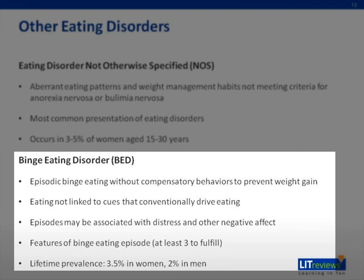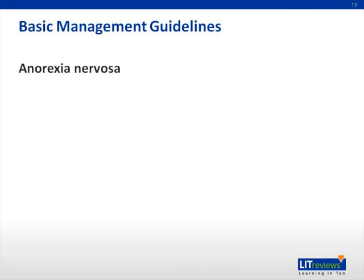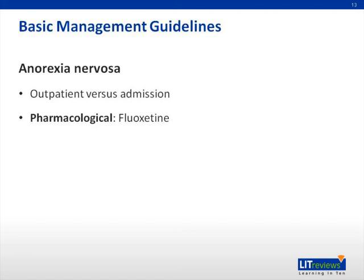Basic management guidelines. Most patients with AN will be treated on an outpatient basis. Hospital admissions should only be considered if there are serious or life-threatening medical problems, such as cardiac arrhythmia requiring continuous monitoring. Fluoxetine is an indicator of pharmacological treatment for AN, especially if there are clear obsessional ideas regarding food, and can also be used to treat comorbid depressive disorders.